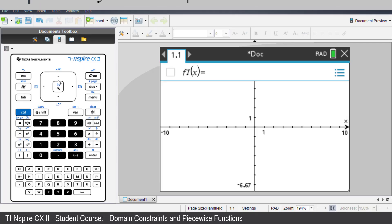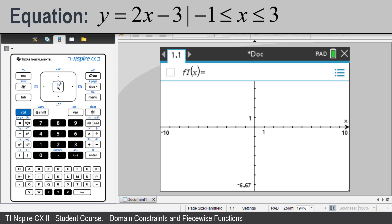We're going to graph y equals 2x minus 3 with the restricted domain of negative 1 through to 3.